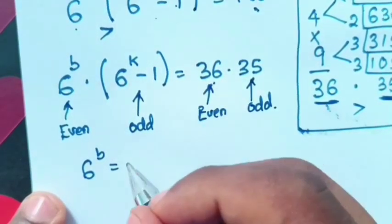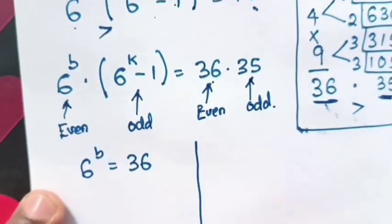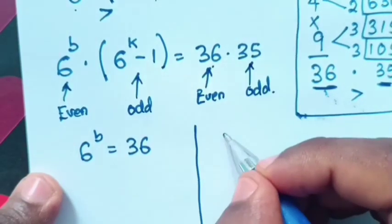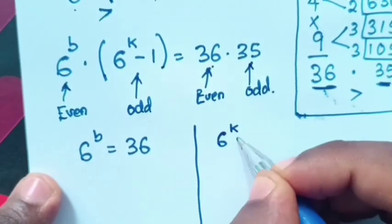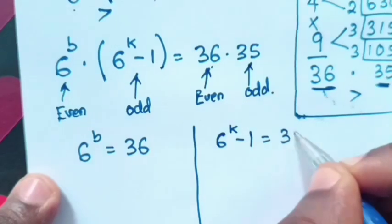So, 6 power b is equal to 36, and 6 power k minus 1 is equal to 35.